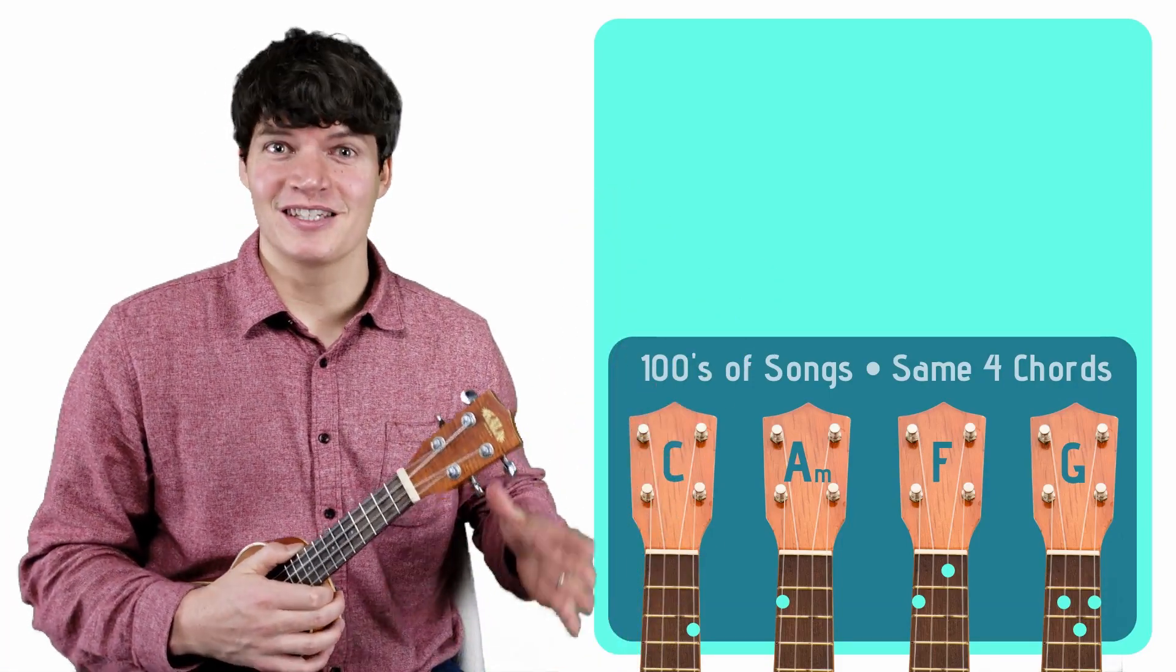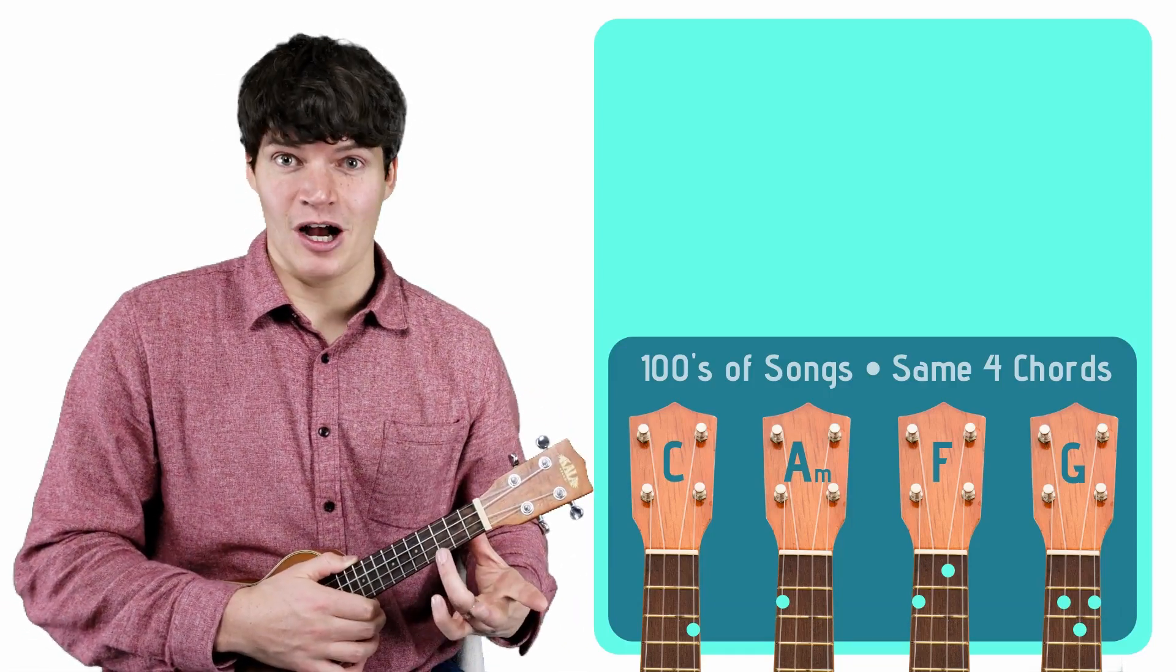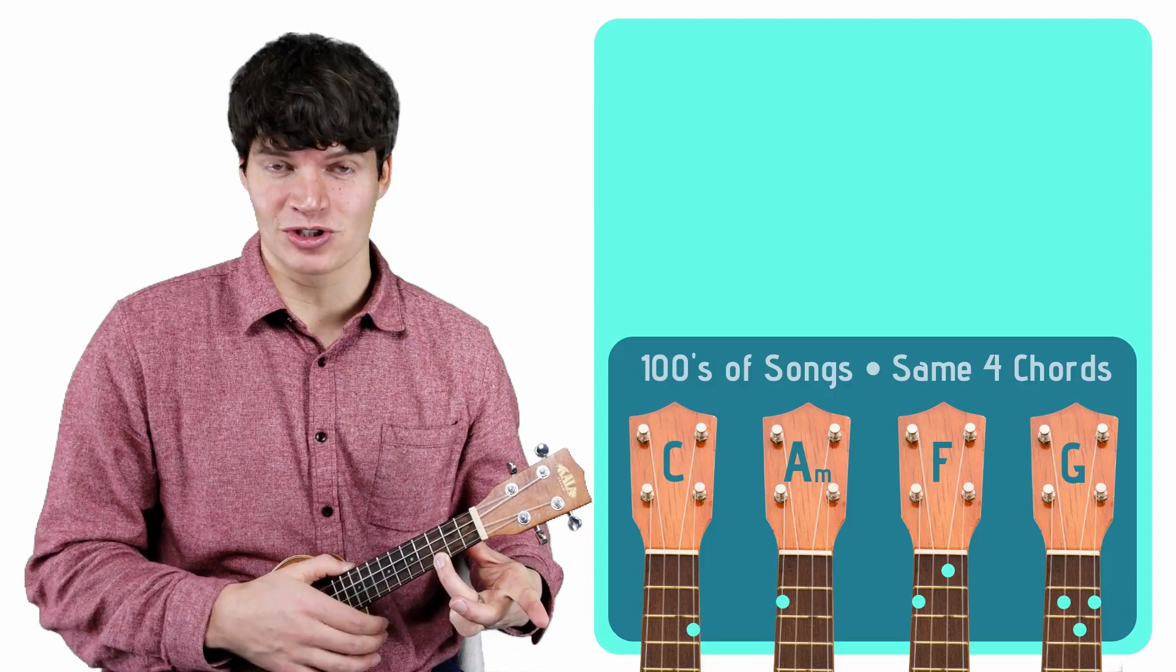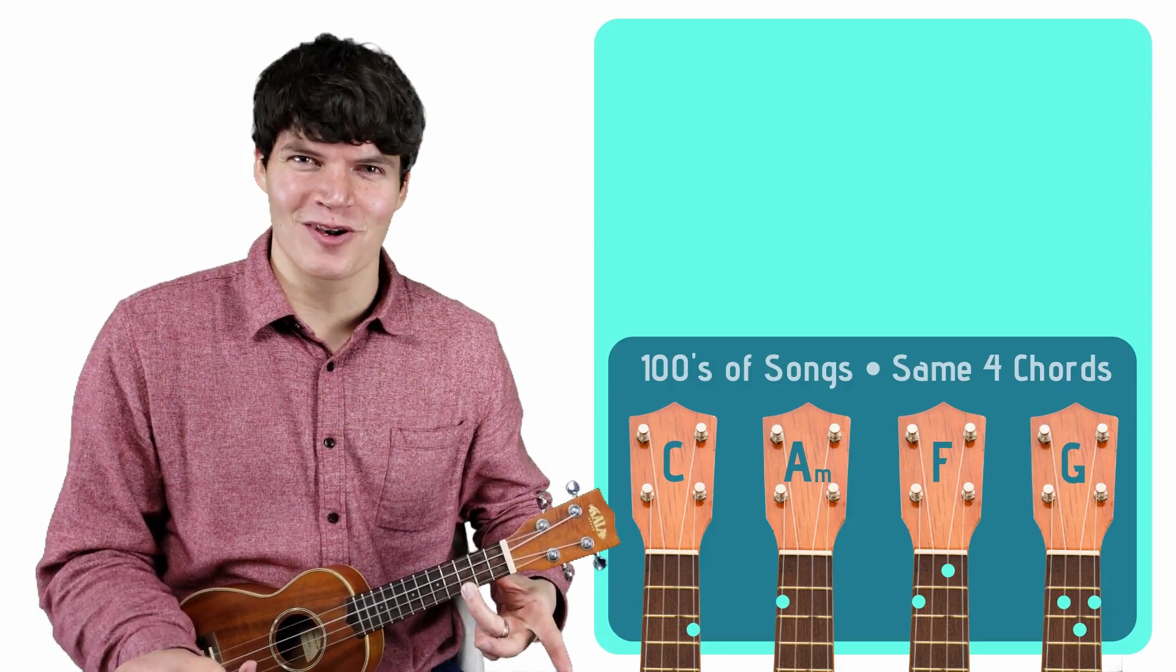The first chord that you should know is the C chord. You'll play it by taking your ring finger and placing it on the third fret of the bottom string. Really easy, right? You just learned your first ukulele chord.